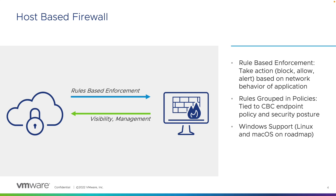Carbon Black host-based firewall allows you to block, allow, and/or alert based on the network behavior of an application on a Windows machine. A good example of when this would be useful is when mitigating against bad actors using RDP with either valid accounts or brute force credentials, and preventing them from moving laterally on the same VLAN within your network.